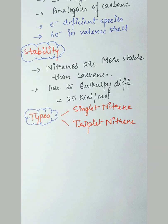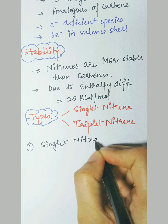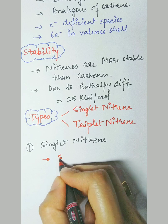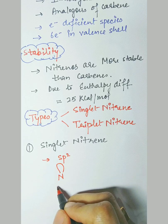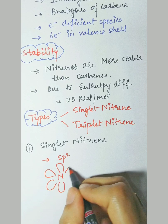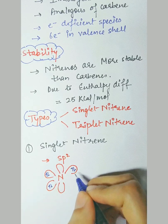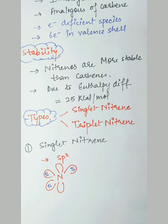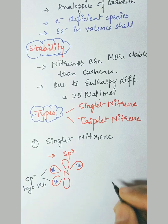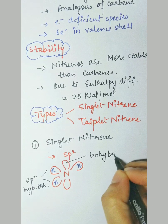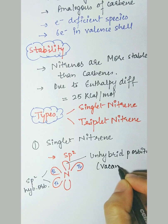Carbene also had the same types. Taking singlet nitrine first: in singlet nitrine, the hybridization is sp2. We have nitrogen with p orbital, p orbital, p orbital, and p orbital. These are the sp2 hybridized orbitals, and this one is the unhybridized p orbital, which is vacant — having no electron.